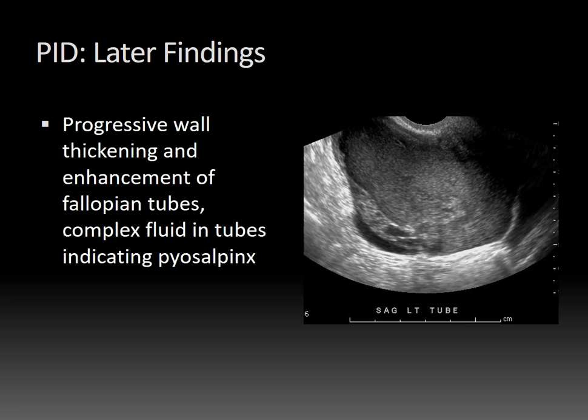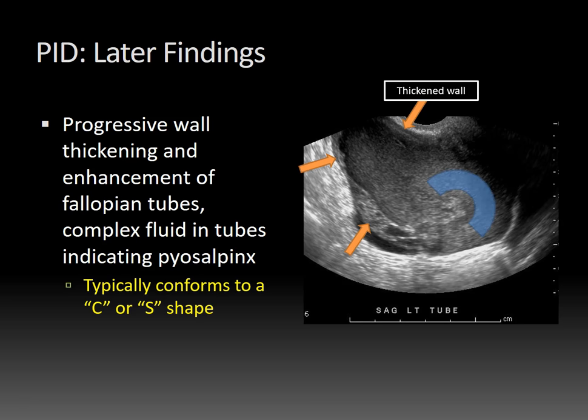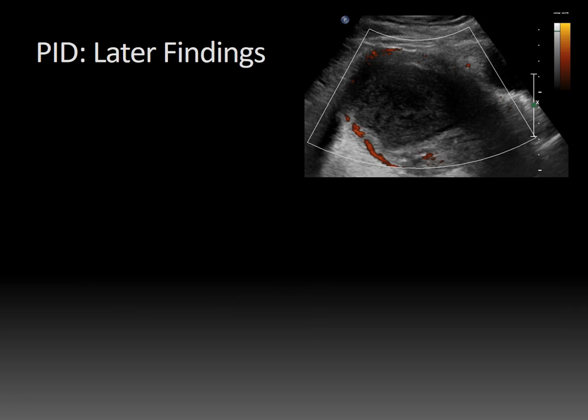With later findings of PID, you start getting progressive wall thickening and enhancement of the fallopian tubes, and complex fluid and debris accumulate in the tubes, leading to pyosalpinx. That dilated tube will still typically conform to a C or an S shape — and that's a key finding. So here you can see on ultrasound there is thickening of the tubal wall and debris in the tube, but you still see this C shape.